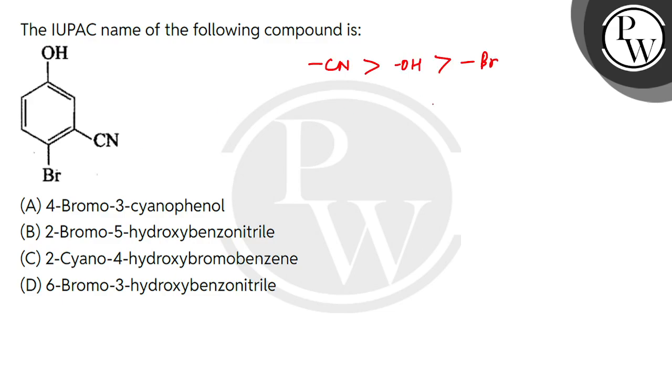If the priority order is this, then what will we do in that case? The highest priority functional group is through numbering. Numbering is clockwise or anti-clockwise. Let's see how it happens. If I have a clockwise numbering, 1, 2, 3, 4, 5, 6.